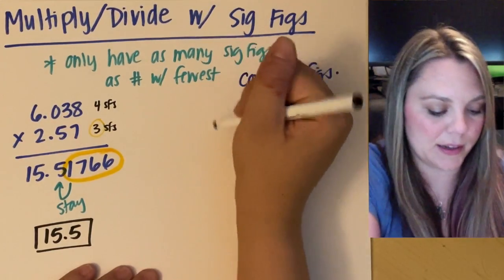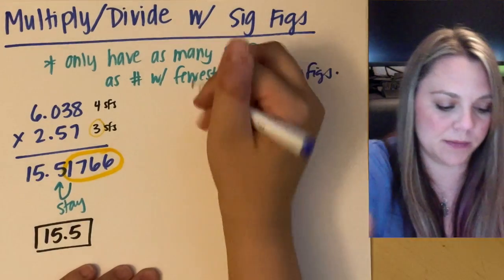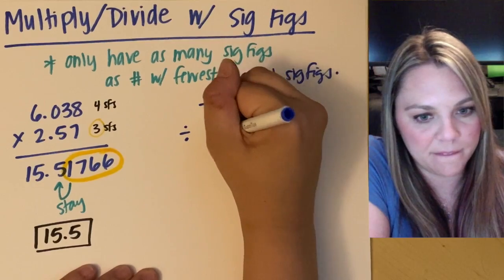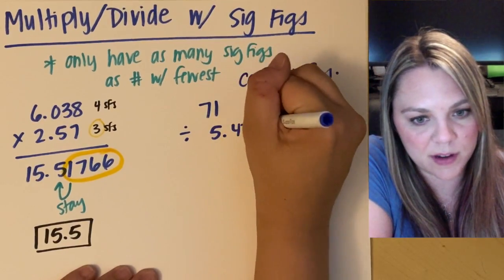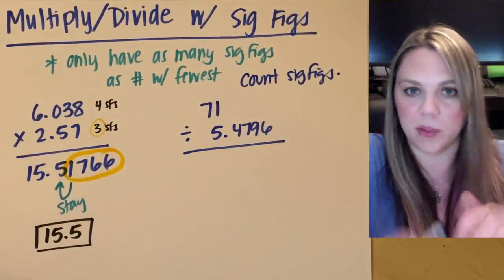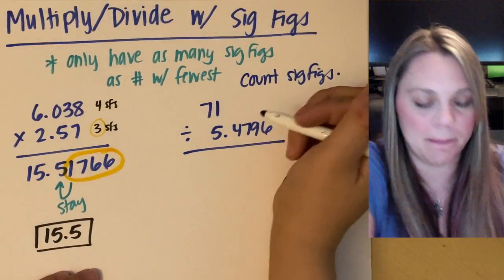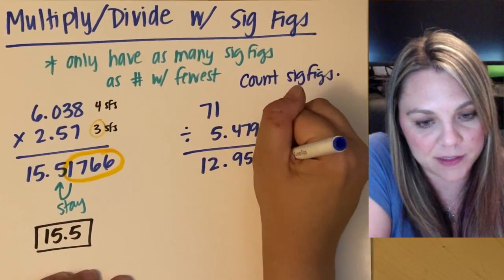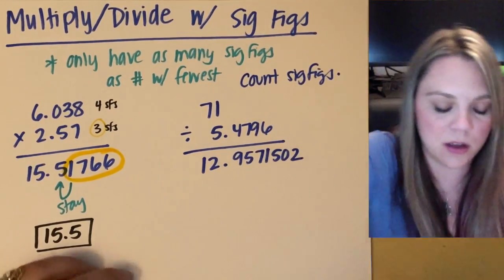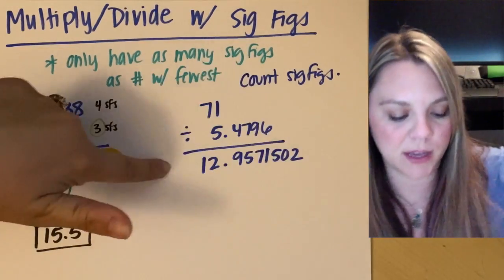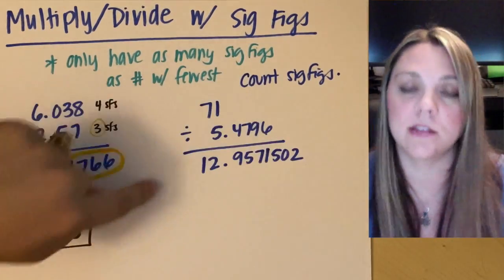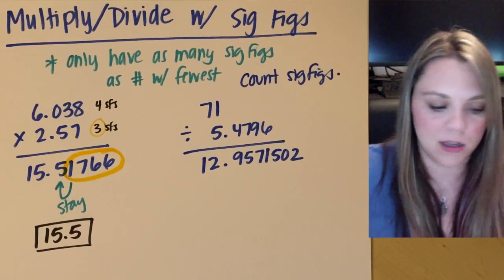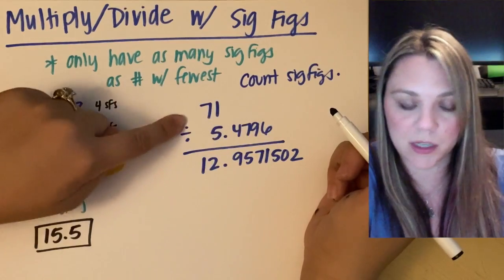If I had another one, 71 divided by 5.4796, and I plug that into my calculator, my calculator gives me 12.9572 many numbers here to go. Okay, this is what my calculator gives me, but that is not what you're going to write on any quiz or test because you are smarter than your calculator.